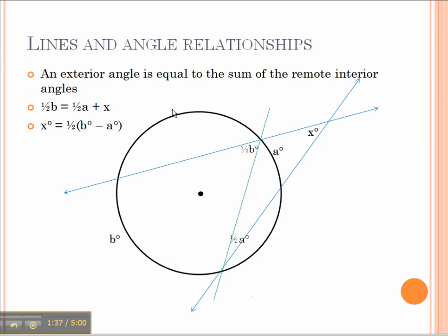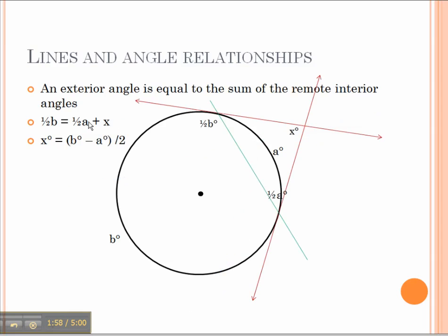And going back to the exterior angle being equal to the sum of the remote interior angles, that makes half this half angle B equal to the sum of half angle A plus X. And then, when you rearrange that, you then find that angle X will be half the difference between arc angle A and B.